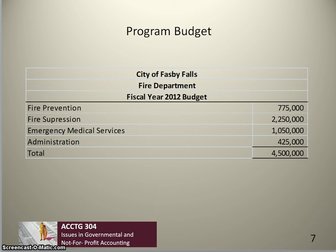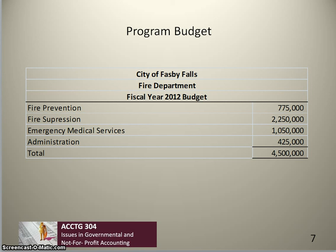Program budgets are less common. If our fire department used a program budget, its appropriations might be broken down into its major activities: fire prevention — which includes inspections and public education programs aimed at preventing fires — fire suppression, which is responding to calls for actual fires, emergency medical services, responding to calls for emergency medical needs of the public, and administration to cover central headquarters activities.